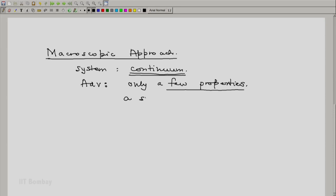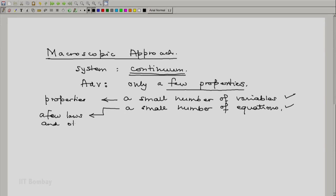And because of a few properties, we have a small number of variables. And hence, a small number of equations, both of which are advantages for proceeding with the solution of a problem. So small number of variables means small number of properties. And small number of equations means a few laws and other relation that we have to work with.